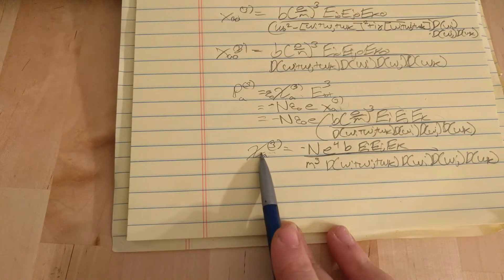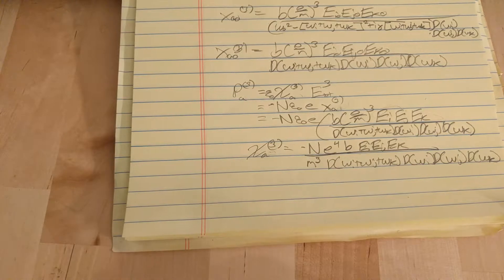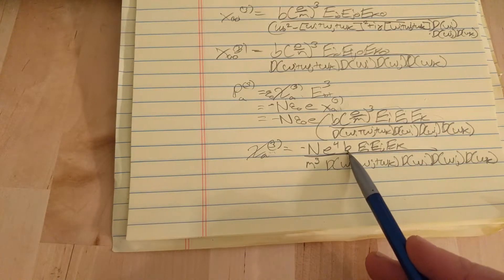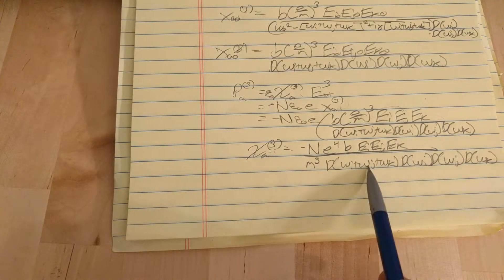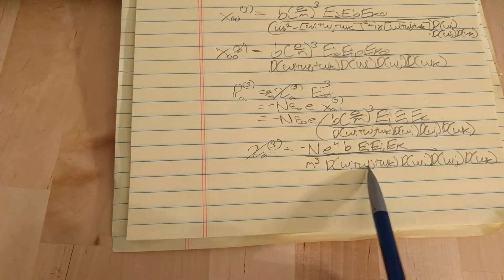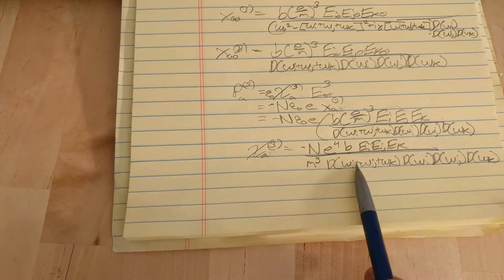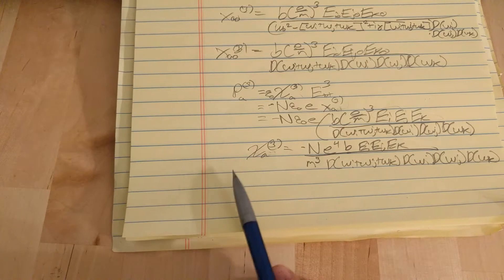And like we said, there's 216 terms. Now, all these terms have names. Some of them do. And, stimulated Raman scattering is one of those. And it's a special case where two of the frequencies are equal to each other. And the third one is such that if you take the difference between those, it's a vibrational frequency.